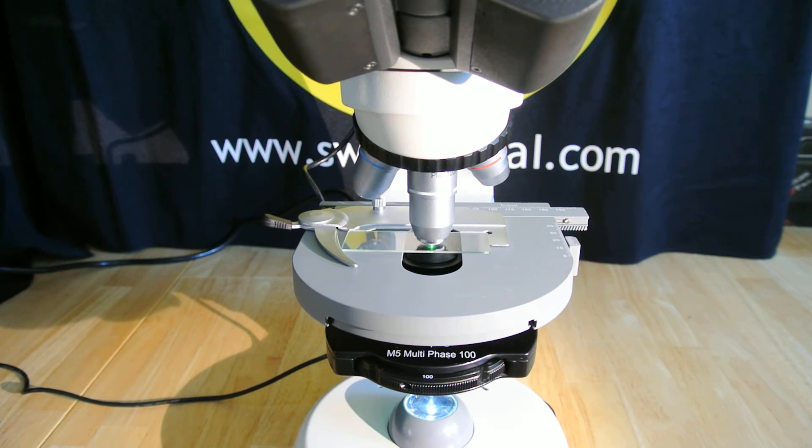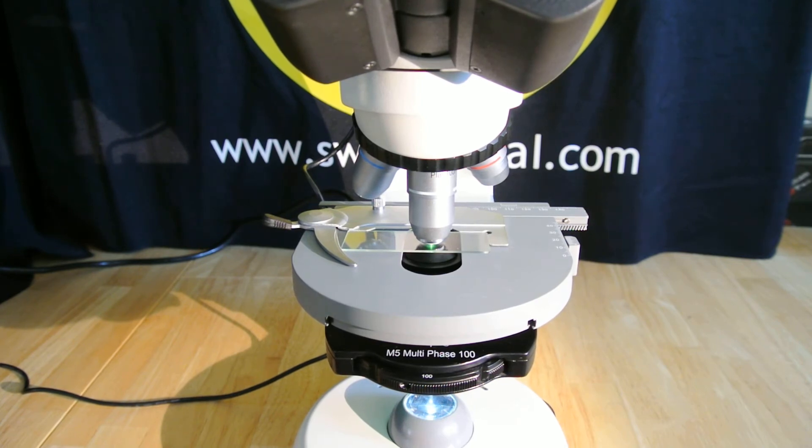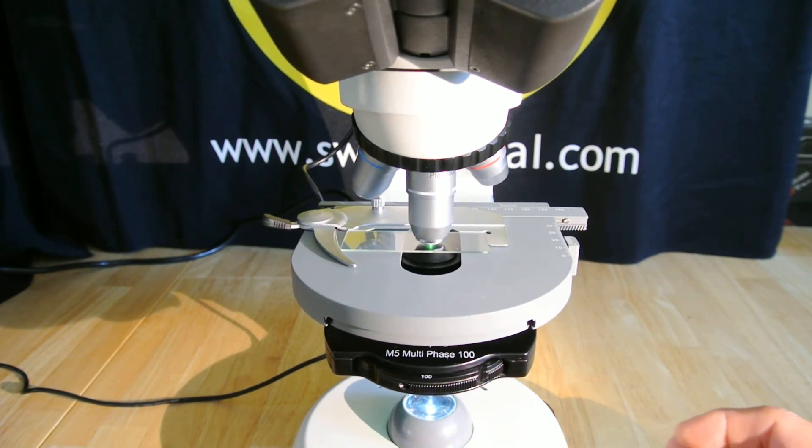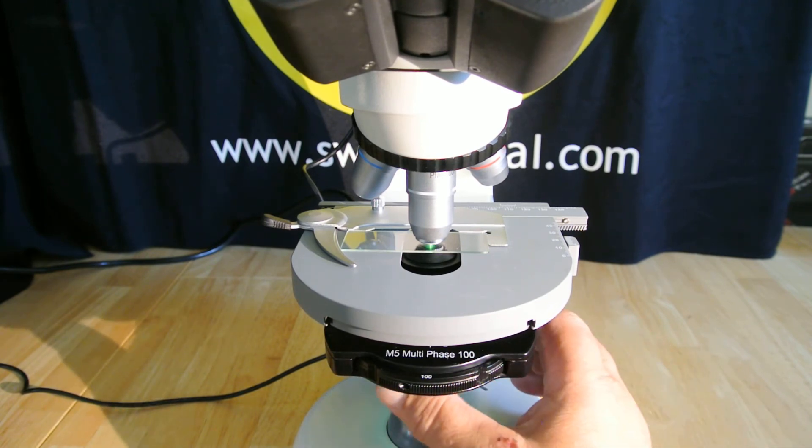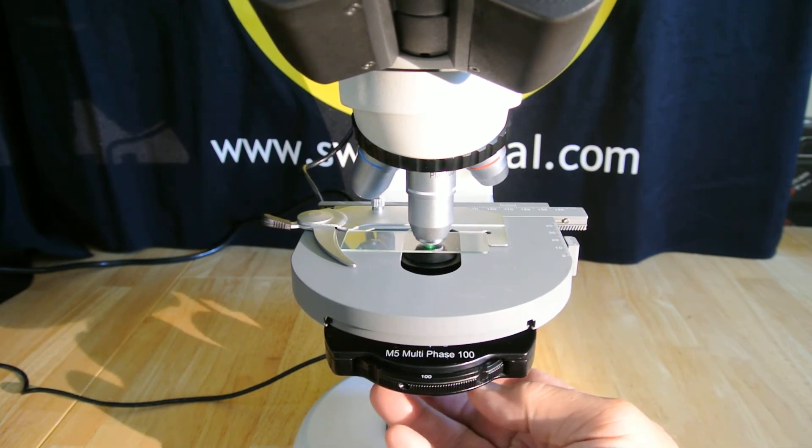It will be necessary for the phase contrast to add a clear green filter. The filter optically stains the specimen, allowing structures that are now seen in phase contrast to be further enhanced. Place the green filter in the swing-out filter carrier.